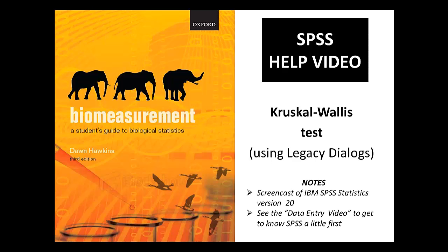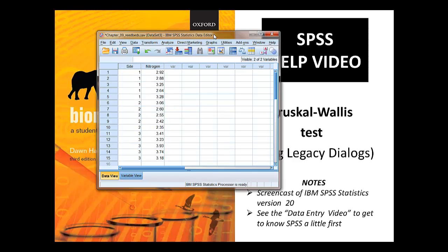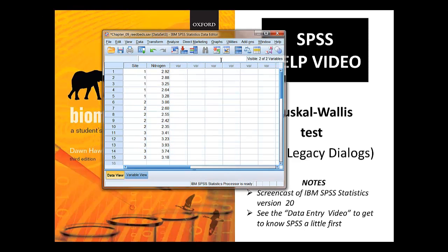We're going to follow the instructions in chapter 9 of the textbook and you might want to have that open next to you as you watch this video. We're also going to use the example data from that chapter, which is on nitrogen levels in reedbeds, in three different sites in a reedbed.